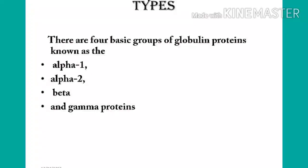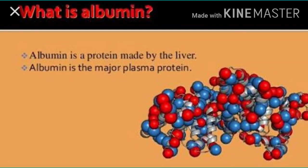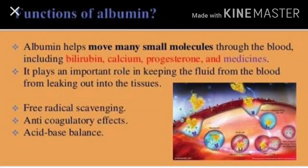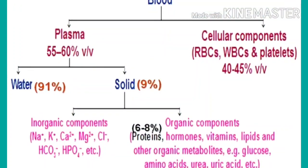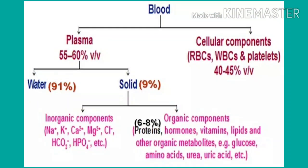Gamma globulins are antibodies which function in the immune response of the body. Albumins help in osmotic balance — they maintain osmotic pressure, which is needed to draw water from the surrounding tissue fluid into the capillaries, and this action is needed to maintain blood volume and pressure. Plasma contains small amounts of minerals like sodium, calcium, magnesium, bicarbonates, etc. Plasma without the clotting proteins is called serum.